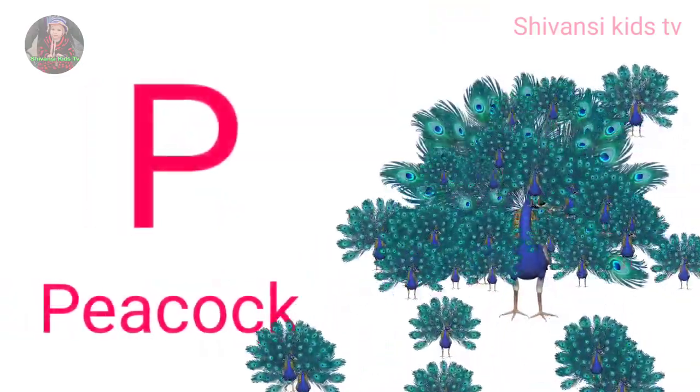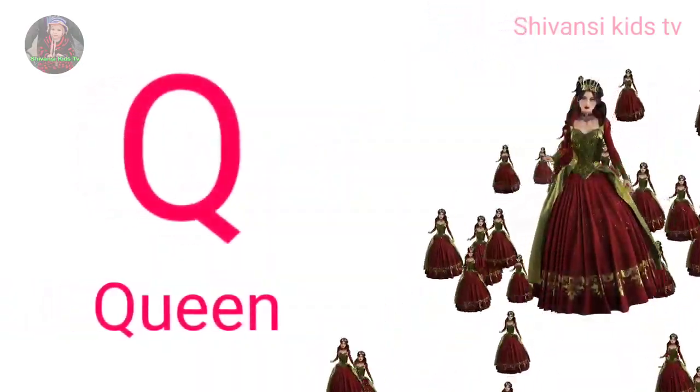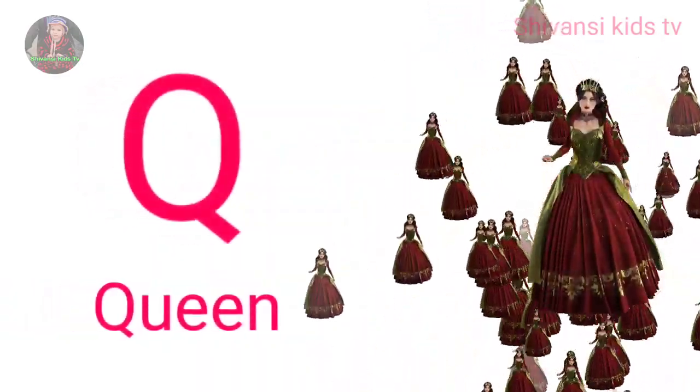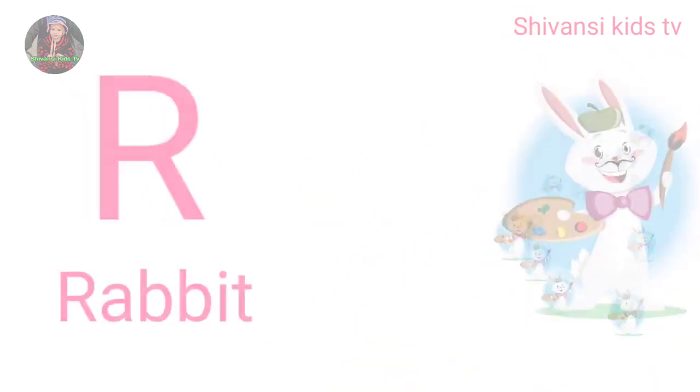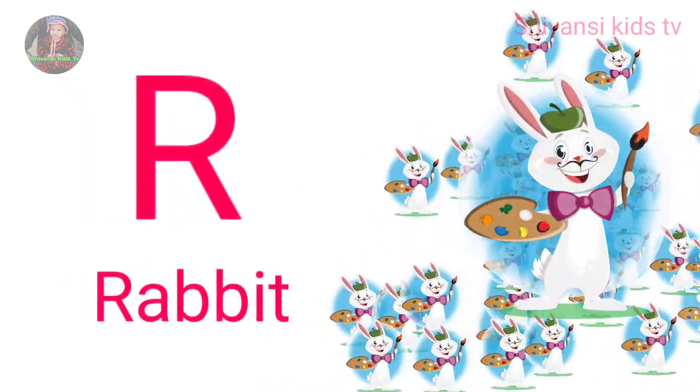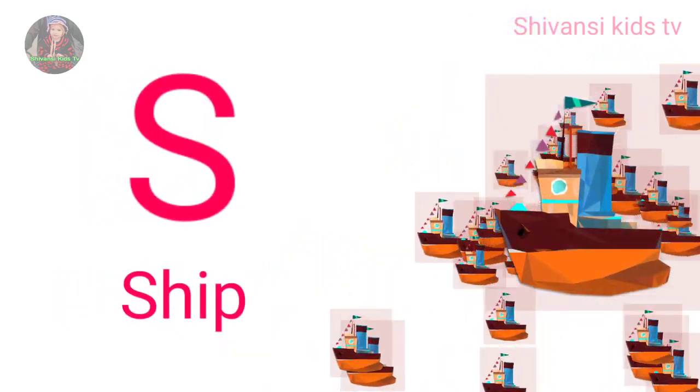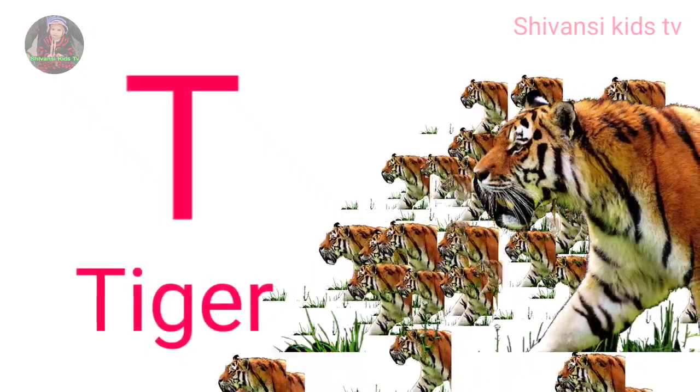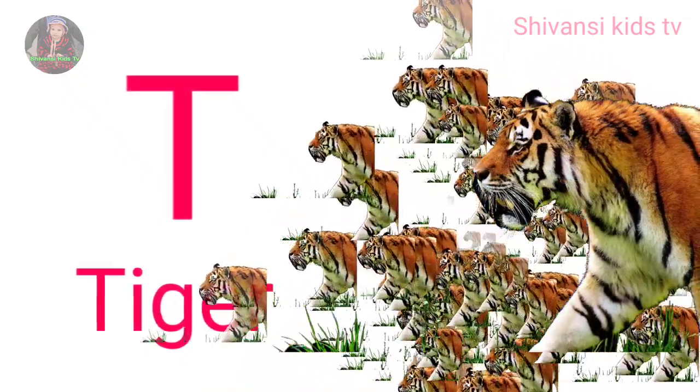P for peacock, Q for queen, R for rabbit, S for sheep, T for tiger.